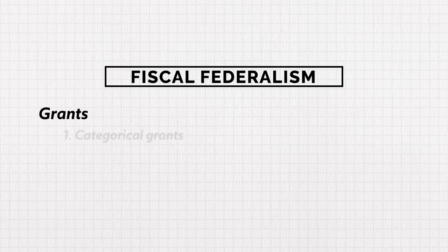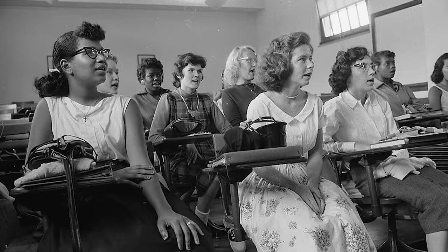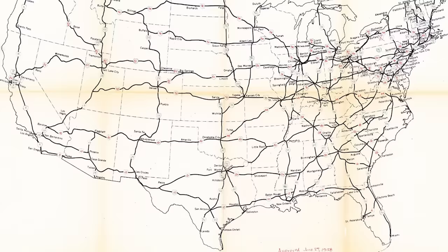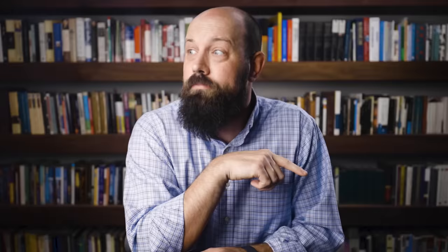There are two kinds of grants. Categorical grants are given to states as long as the states comply with specific federal standards — the federal government says here's money and you must spend it the way we want. These kinds of grants were used as incentives to integrate schools in Lyndon Johnson's administration, and also to raise the drinking age to 21: the federal government offered categorical grants to states for the upkeep of their interstate highways, and if they raised their drinking age, they got the money.